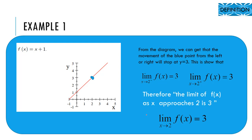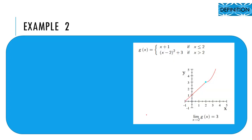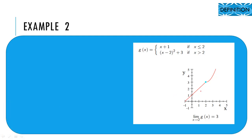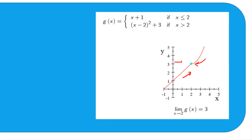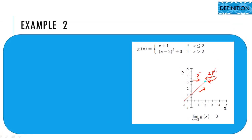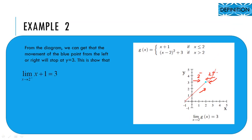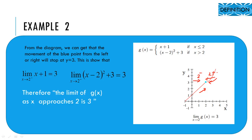How about when a piecewise function is given? How do we determine the limit? Looking at this example, the boundary number is two. So as x approaches two from the left, the function is the linear function x plus one, and from the right it is a quadratic function. Both sides stop at y equal to three as well. This shows that the two-sided limits are equal, therefore we can conclude that the limit is three.